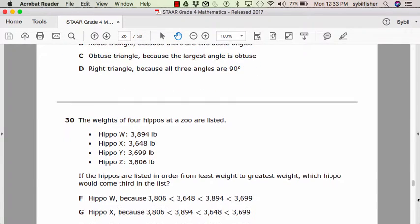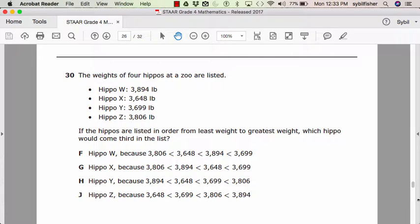Number 30. The weights of four hippos at a zoo are listed. Hippo W, 3,894 pounds. Hippo X, 3,648 pounds. Hippo Y, 3,699 pounds. Hippo Z, 3,806 pounds. If the hippos are listed in order from least weight to greatest weight, which hippo would come third in the list?